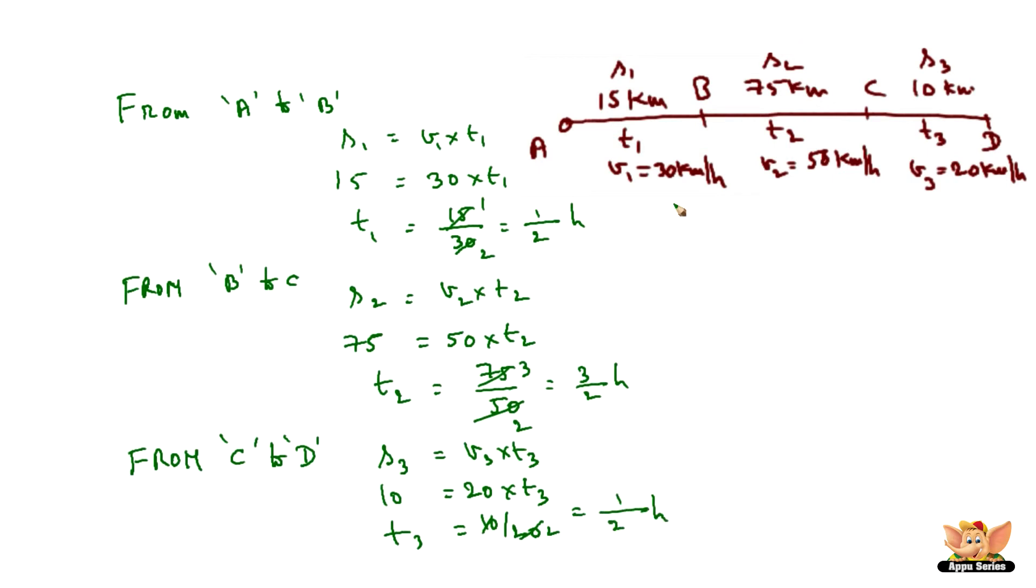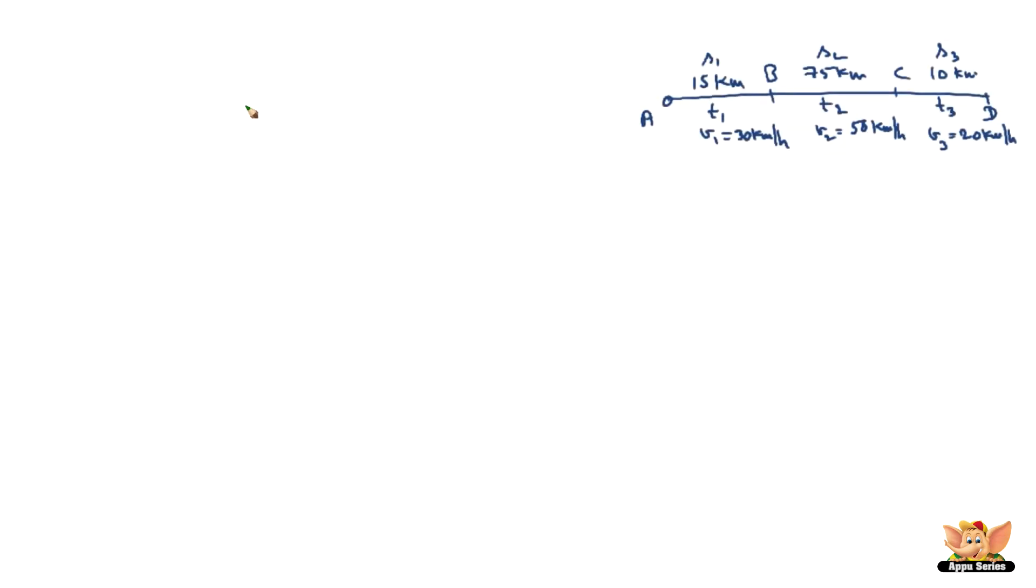We will calculate what is T1 plus T2 plus T3, which is nothing but the total time taken by the train to reach from point A to point C, which is equal to 1 by 2 plus 3 by 2 plus 1 by 2 hours, which is taking 2 as LCM, 1 plus 3 plus 1 which is 5 by 2 hours.